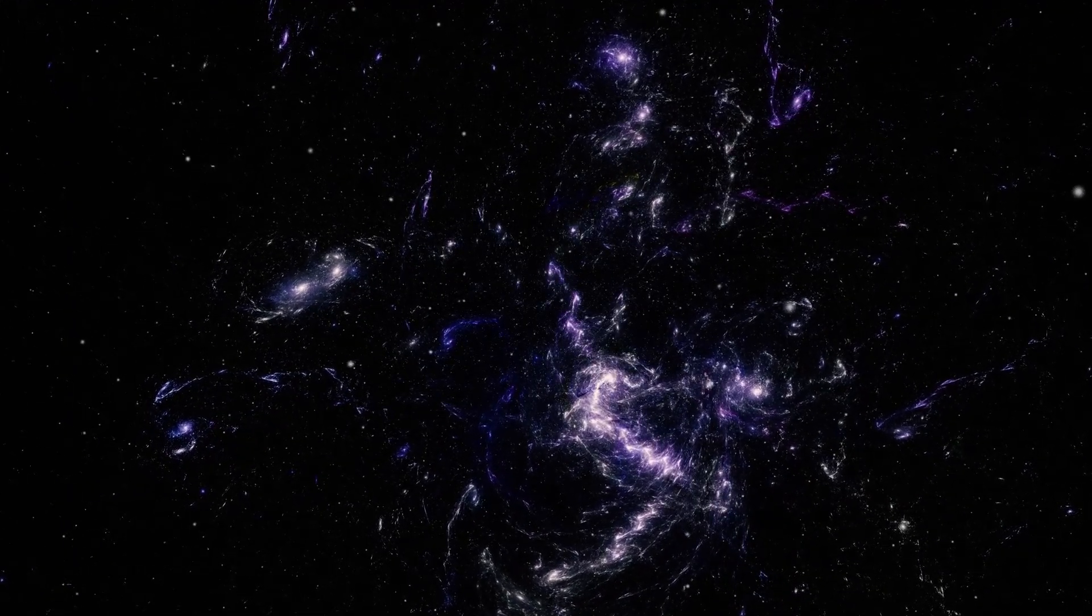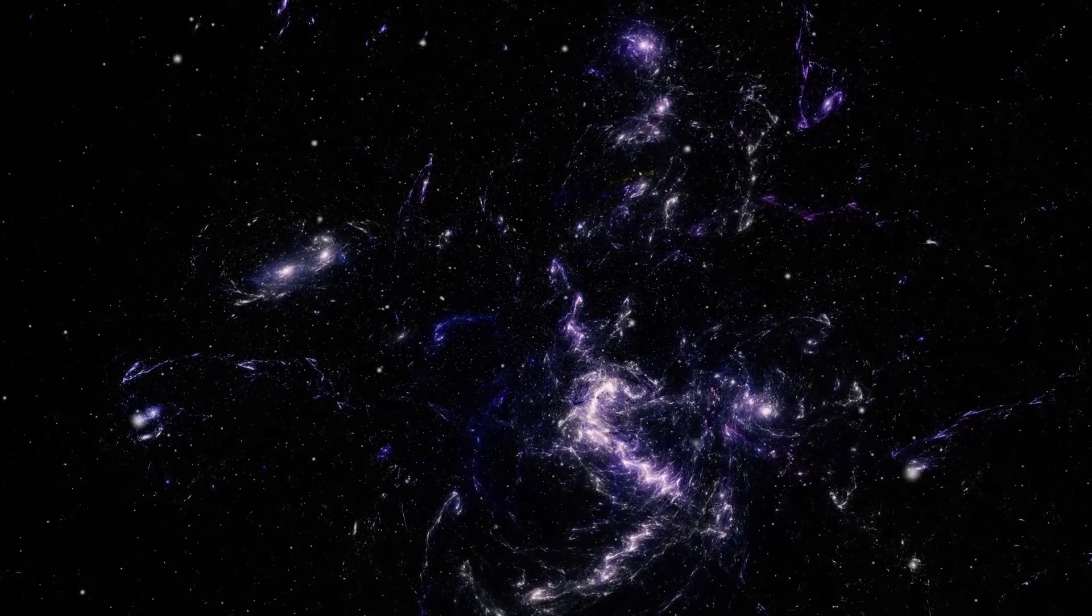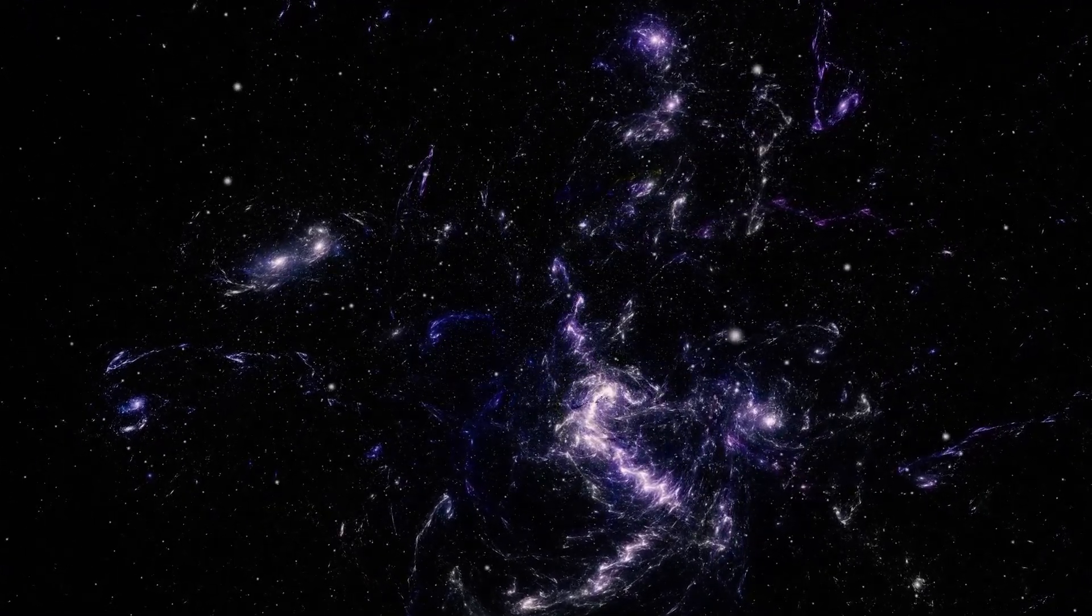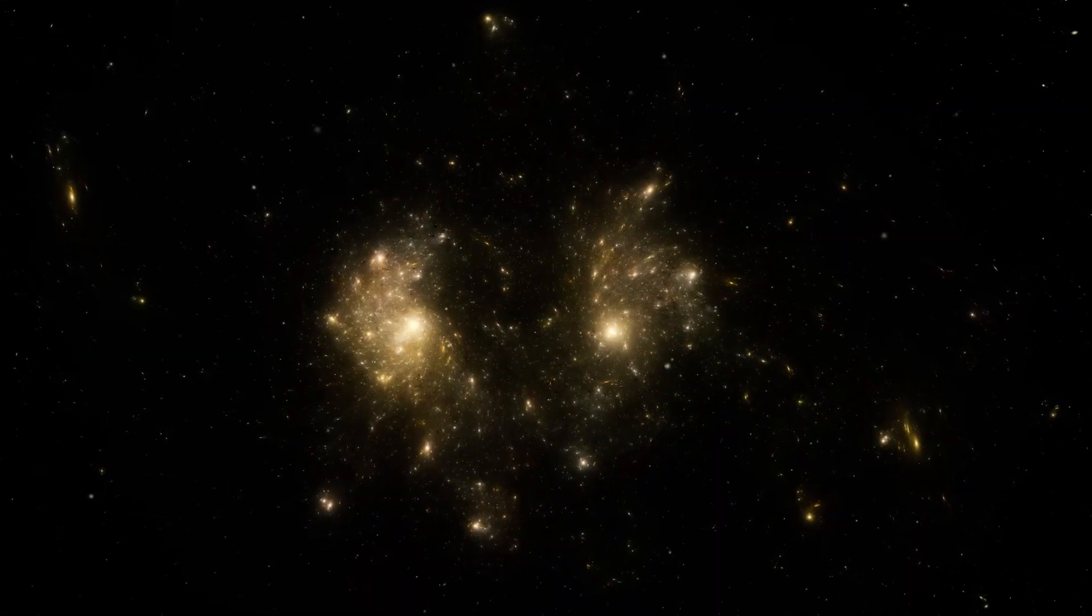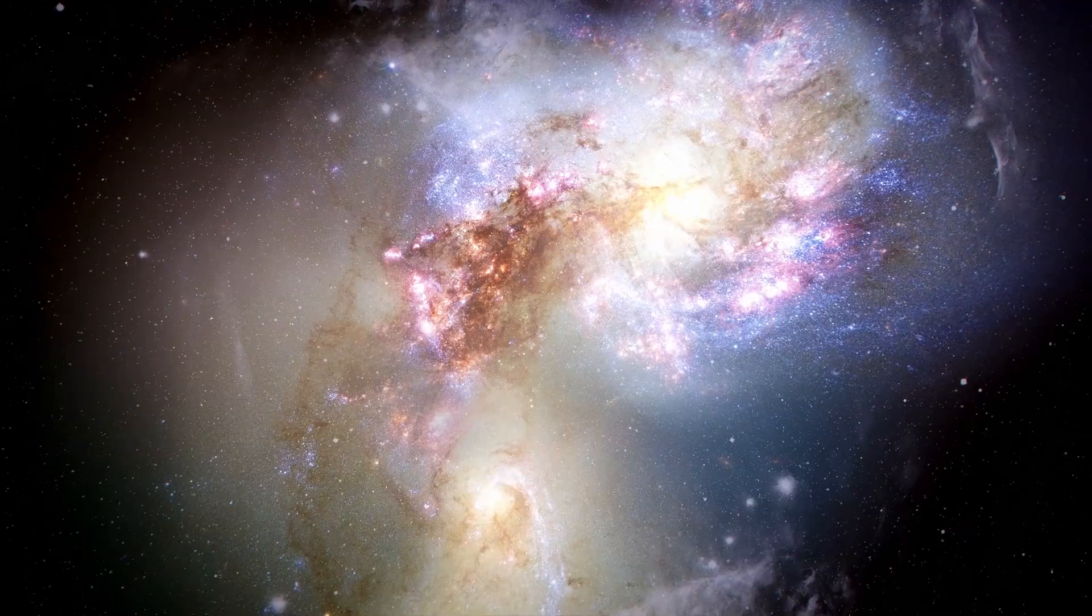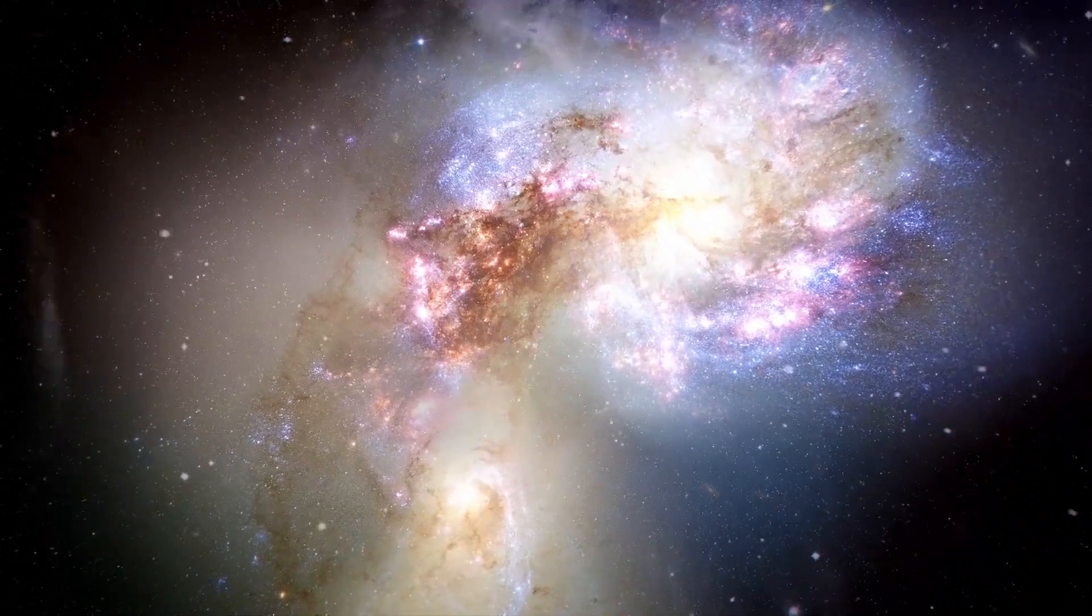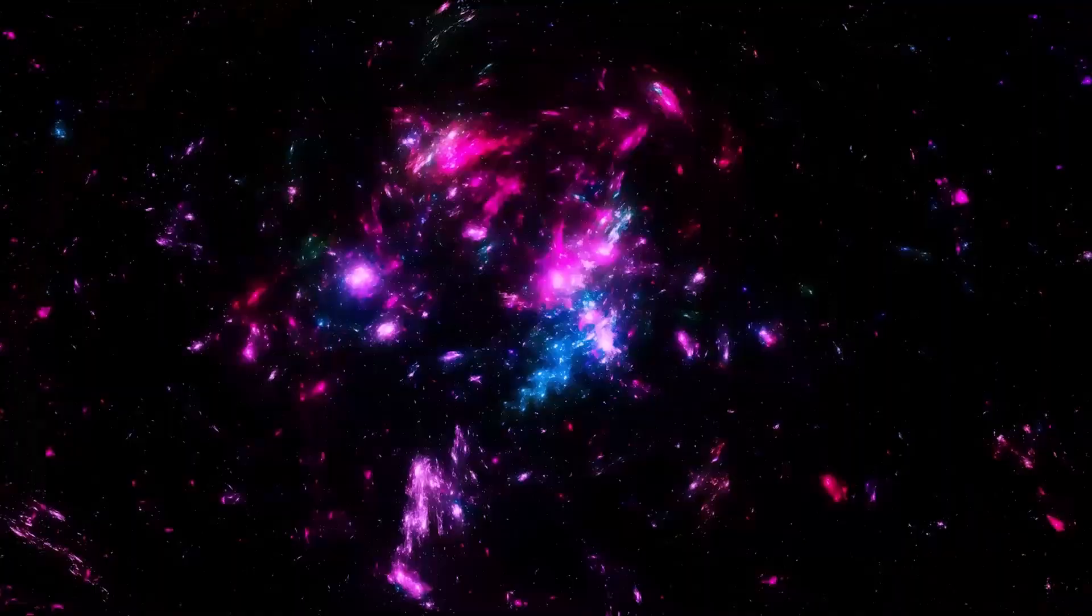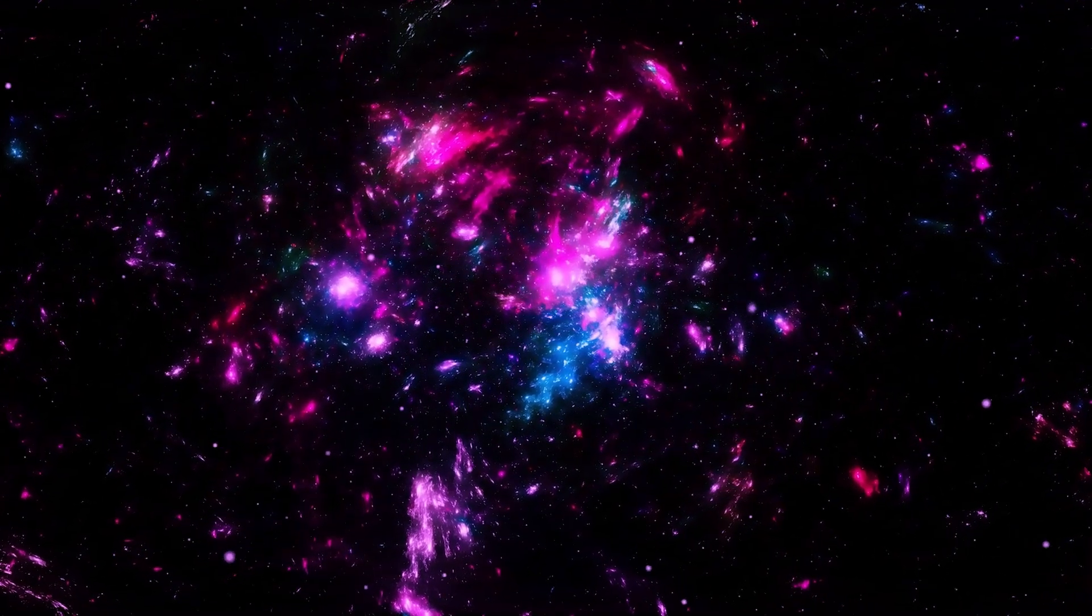3i Atlas was first spotted as a faint speck on the edge of the solar system, moving with a trajectory no local object could follow. It was clearly interstellar. Born beyond the gravitational embrace of our sun, flung across the galaxy by some unknown force, now drifting silently through our neighborhood.